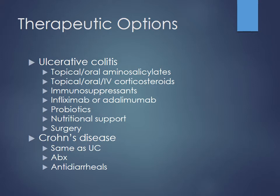Therapeutic options include nutritional support and surgery. For ulcerative colitis, you can use topical therapy — meaning per rectum application to the inside of the colon — to differentiate from oral versus IV. Oral medications can affect the entire GI tract; topical ones are more terminal. We'll also see immunosuppressants, monoclonal antibodies like infliximab and adalimumab that inhibit TNF-alpha, and probiotics. For Crohn's disease, similar therapies are used, but topical therapy is not appropriate because the disease is so diffuse.